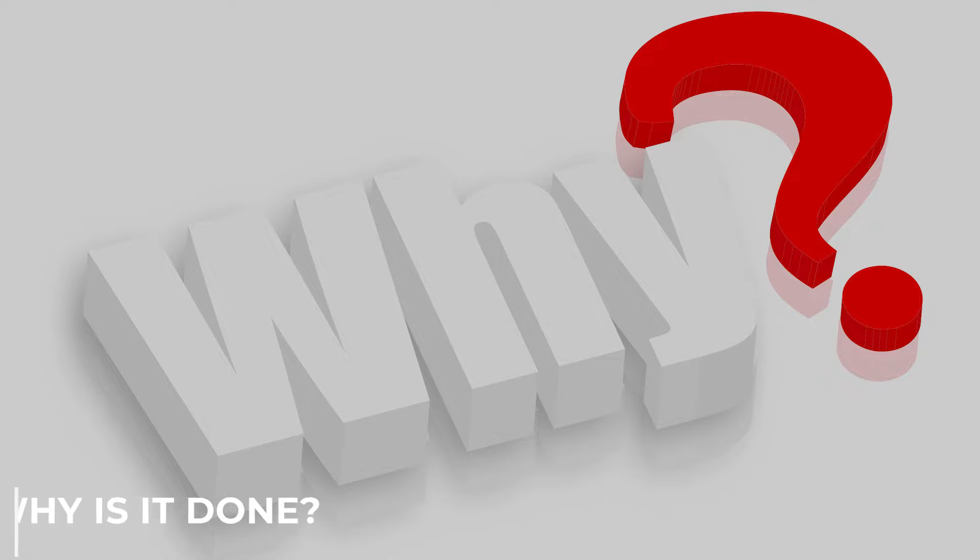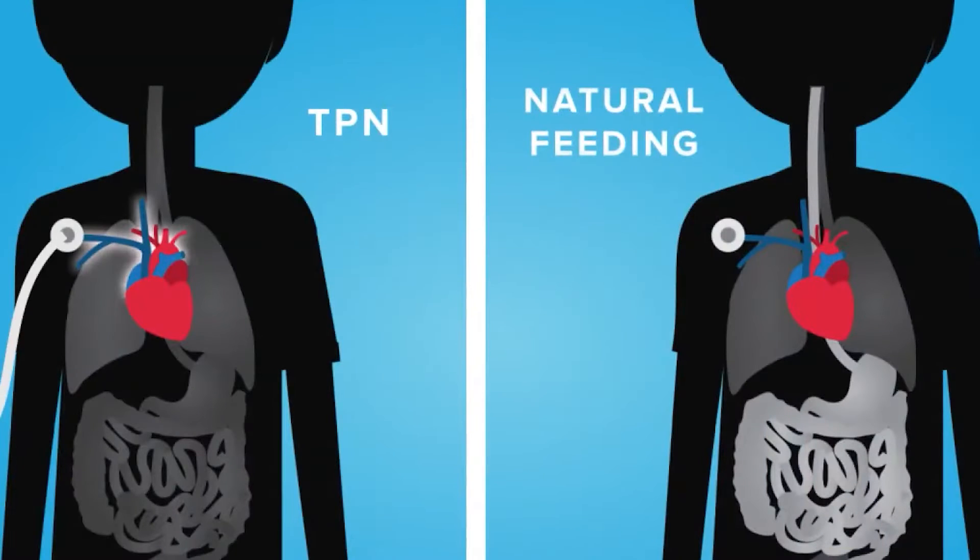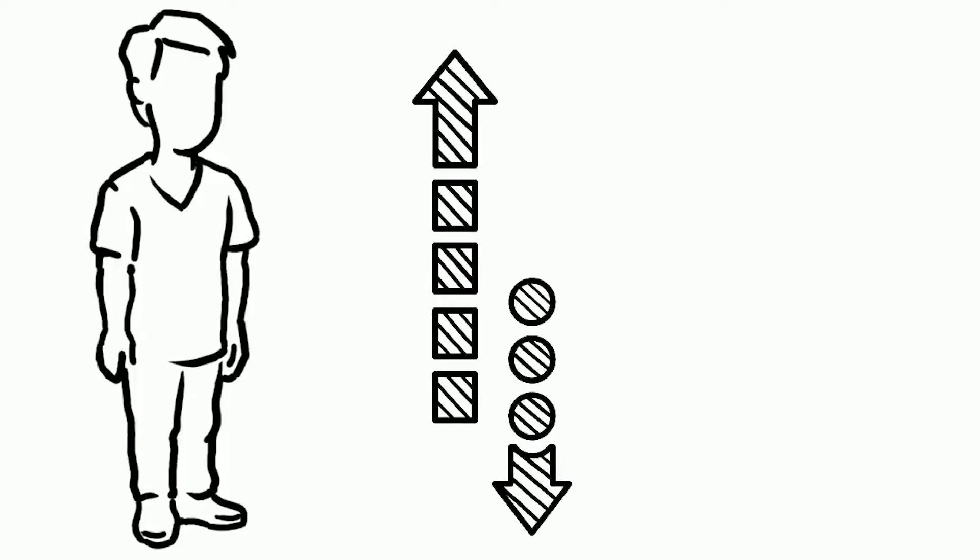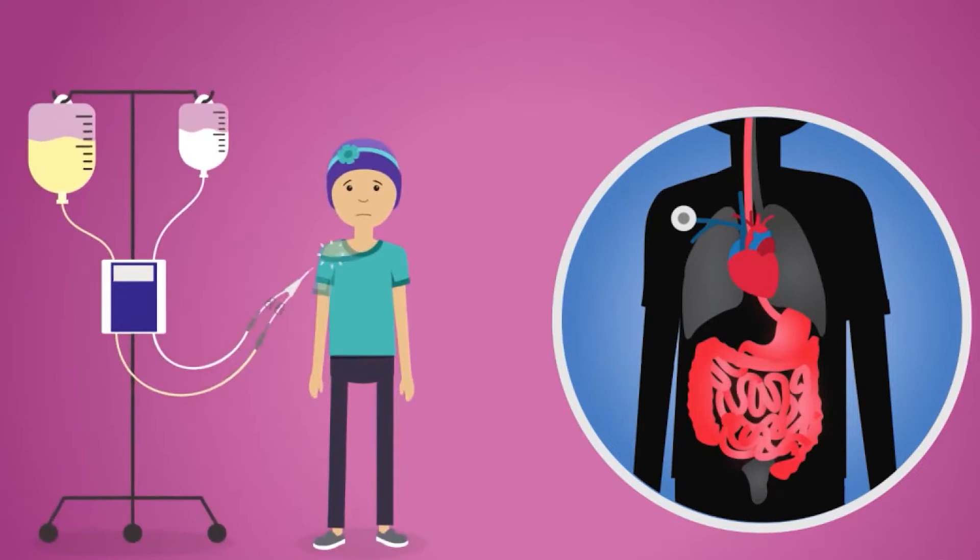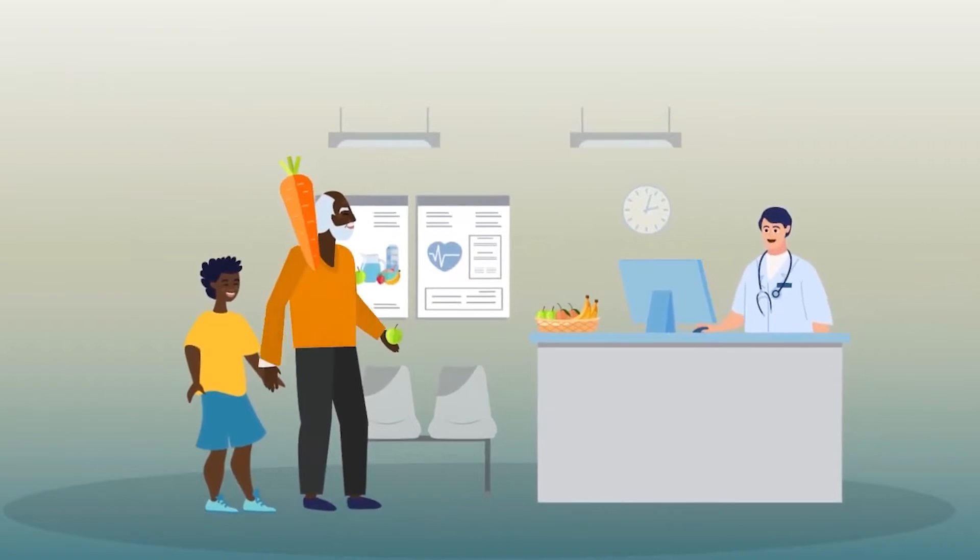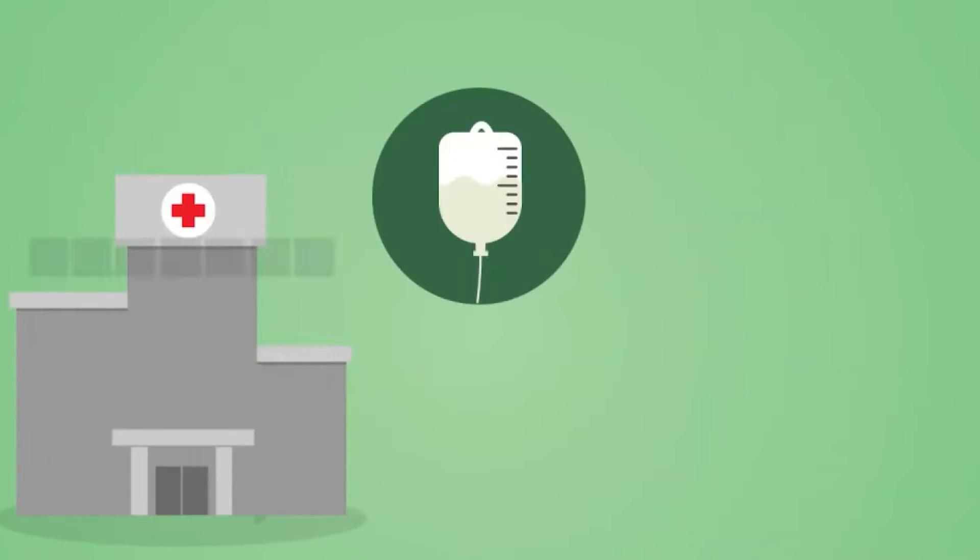Why is it done? Parenteral nutrition is used by people whose digestive systems either can't absorb or can't accept enough food consumed orally. Intravenous nutrition is referred to as home parenteral nutrition when it is used outside of a hospital.